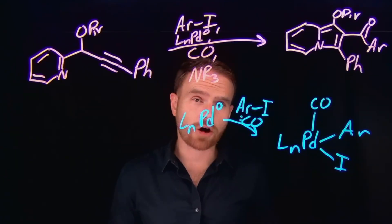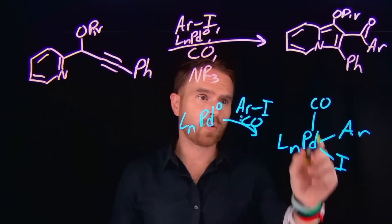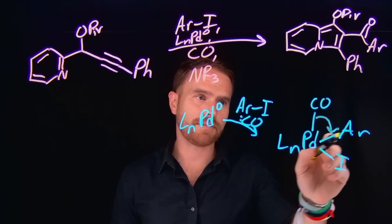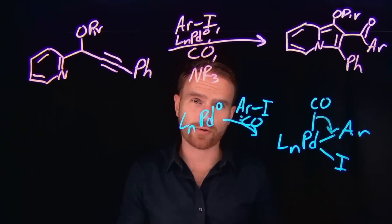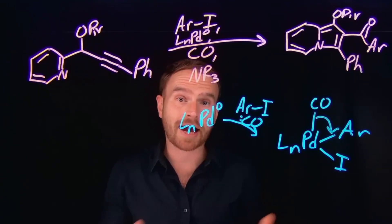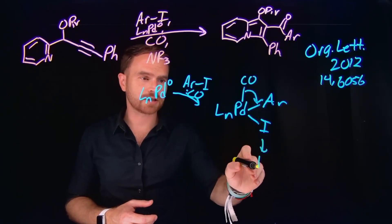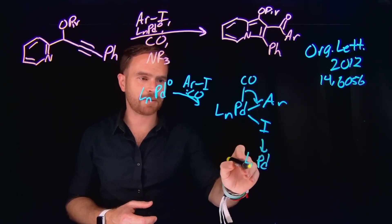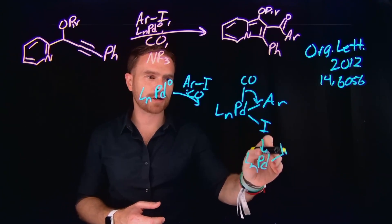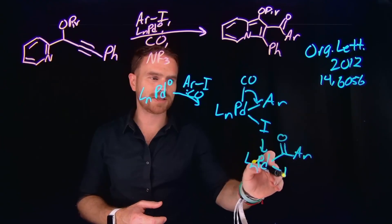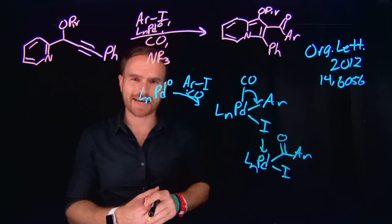And what will happen next is called migratory insertion, where this CO group is actually going to migrate and insert itself in between the palladium and the carbon bond contained in this aryl group. And this is actually a really common transformation for things like hydroformylation, which is a common way to make these carbonyl containing groups using transition metal catalysis. So following migratory insertion, the next product of our transformation is going to be again some amount of ligand attached to this metal, as well as now we're going to contain this CO bond inserted in between that aryl group. And then we still have the iodide contained as a part of this organometallic complex.